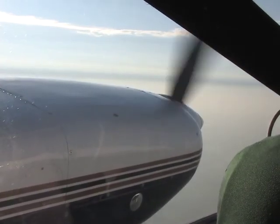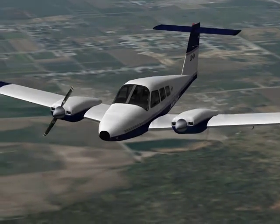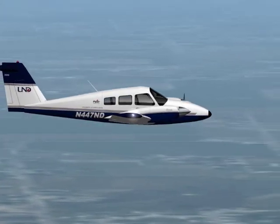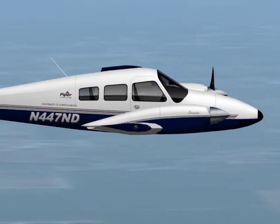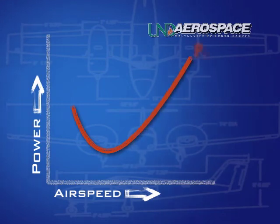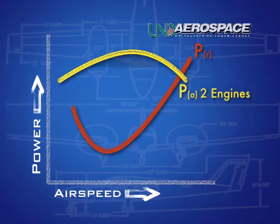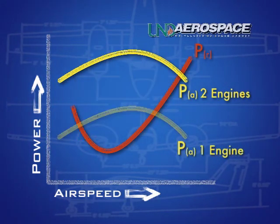A common misconception made by multi-engine rating applicants is that when one engine fails, half the horsepower is lost, and thus half the performance is lost. This misconception can be fatal. In actuality, most light twins will lose an average of 80% of their excess power. When referencing the power available versus power required curves, it is apparent how much performance will be reduced.